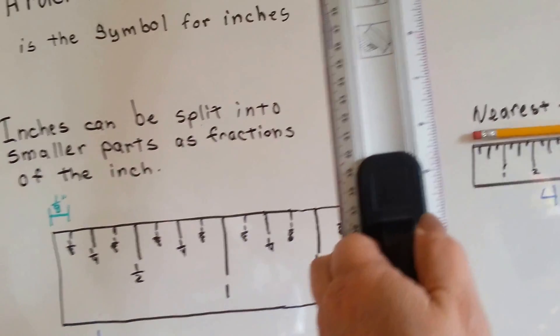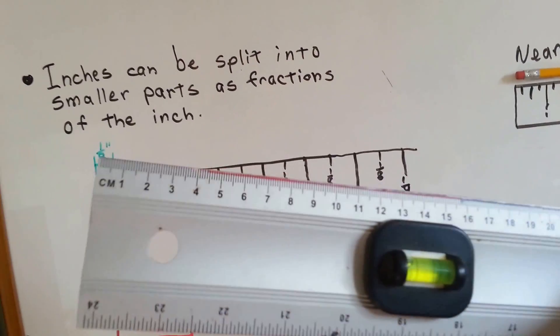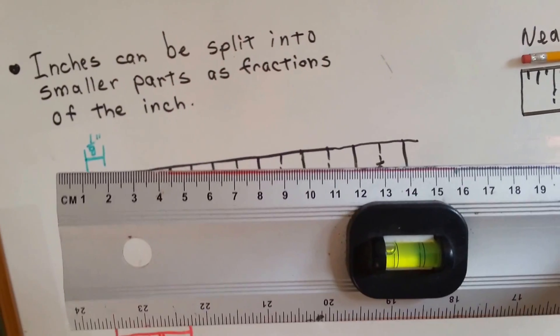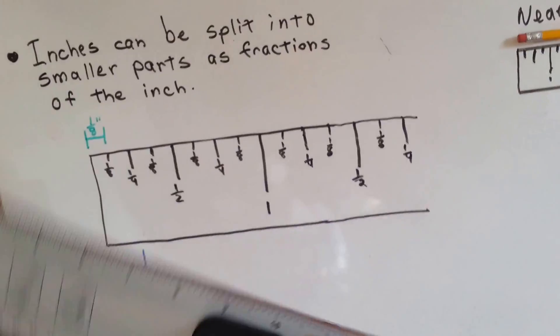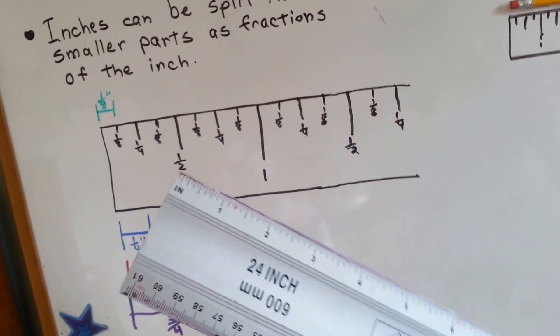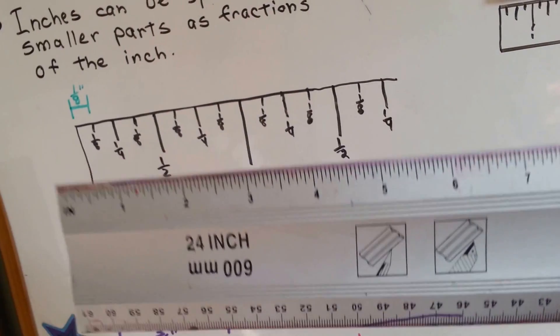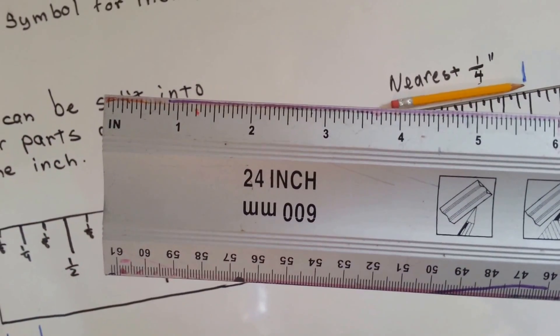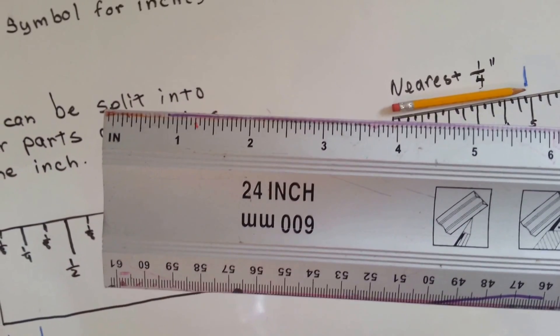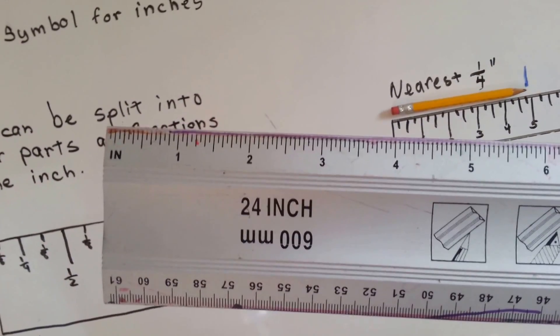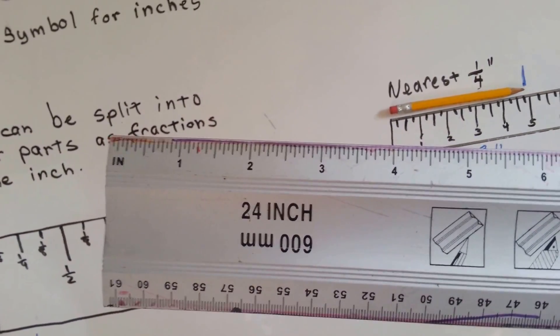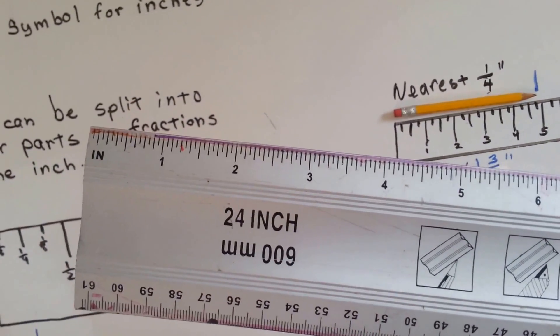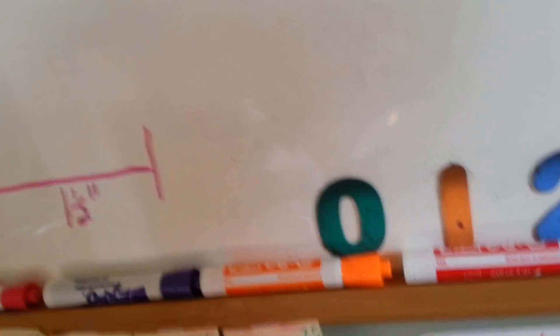Now on the other side, if you see these little lines over here, those are centimeters, and we're not talking about that today. We're talking about inches. There's half inches and all kinds of little lines in between there, and that's what we're going to talk about.